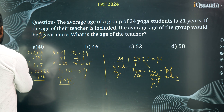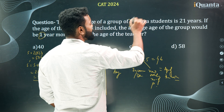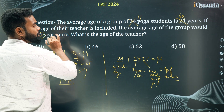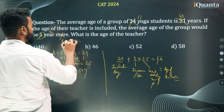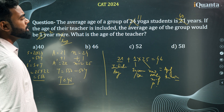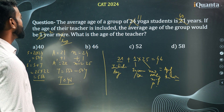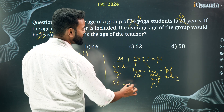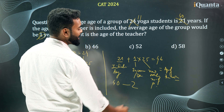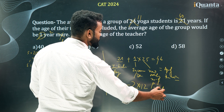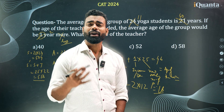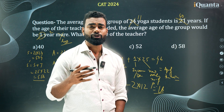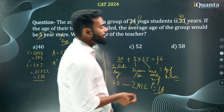Applying the same shortcut with changed data: 11 yoga students, average age 40 years. Teacher is included and the average decreases by 2 years. New total = 12. Teacher's age = 40 + (−2)×12 = 40−24 = 16. So the teacher's age is 16. This method gives the answer very quickly.